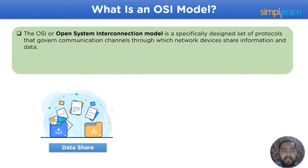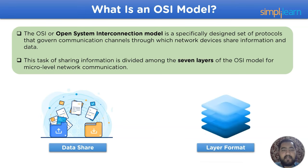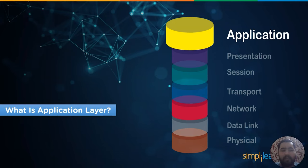The OSI, or Open System Interconnection model, is a specifically designed set of protocols that govern communication channels through which network devices share information and data. This task of sharing and dividing among the seven layers of the OSI model at a micro level is known as OSI functioning.